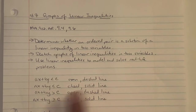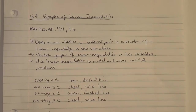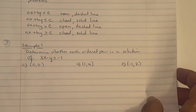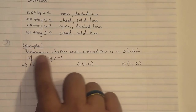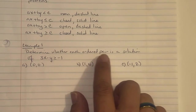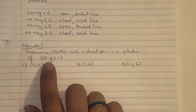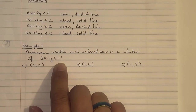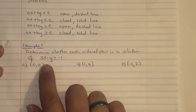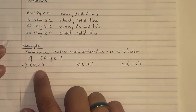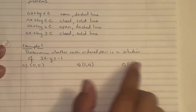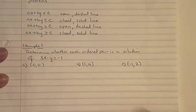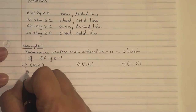We're going to start with Example 1, parts A, B, and C. It says determine whether each ordered pair is a solution of 3X minus Y greater than or equal to negative 1. What we're going to do is take the equation and substitute in each of the ordered pairs and see if it makes a true statement. So we write the equation: 3X minus Y greater than or equal to negative 1.